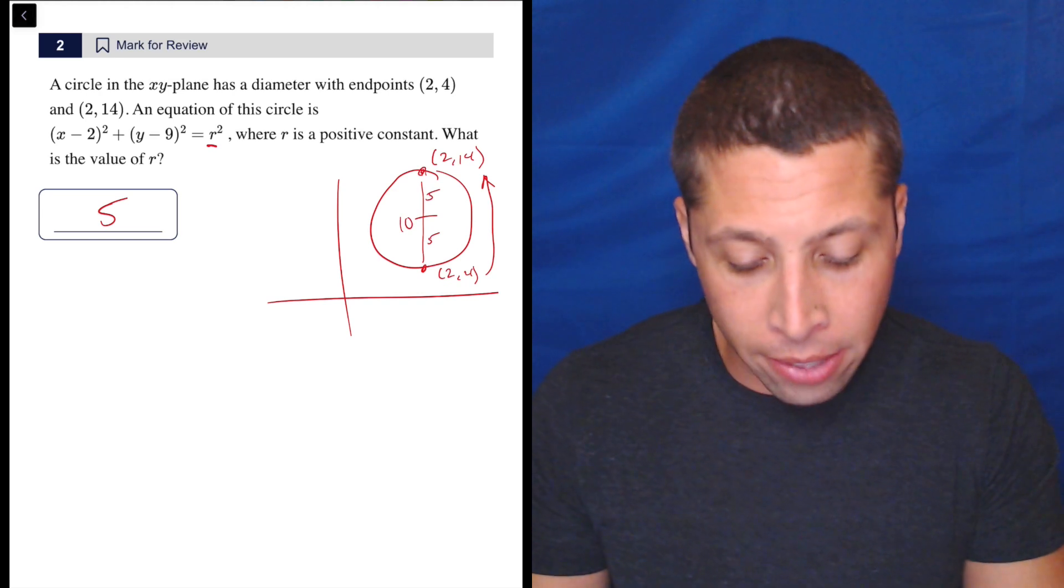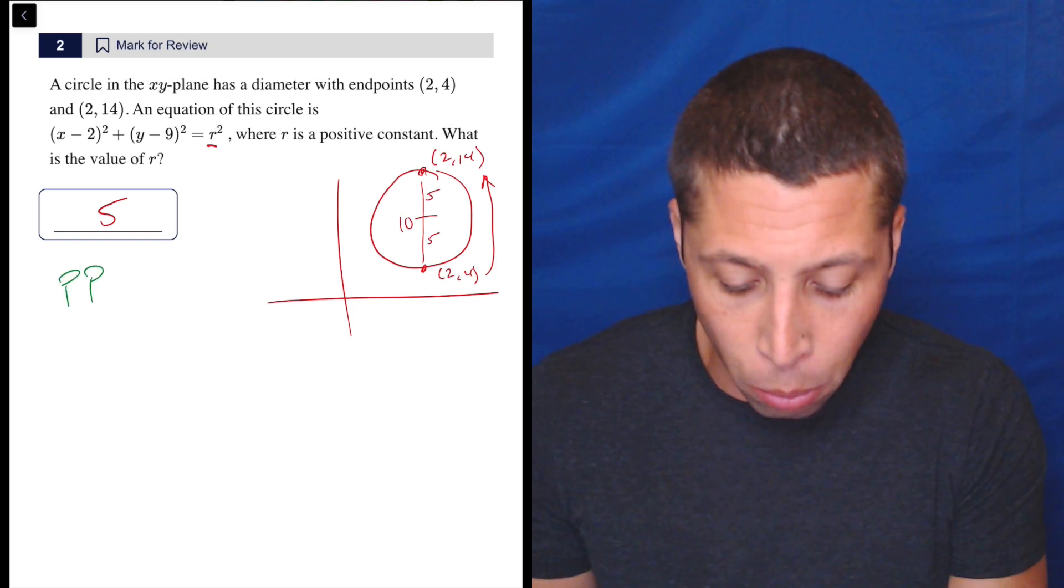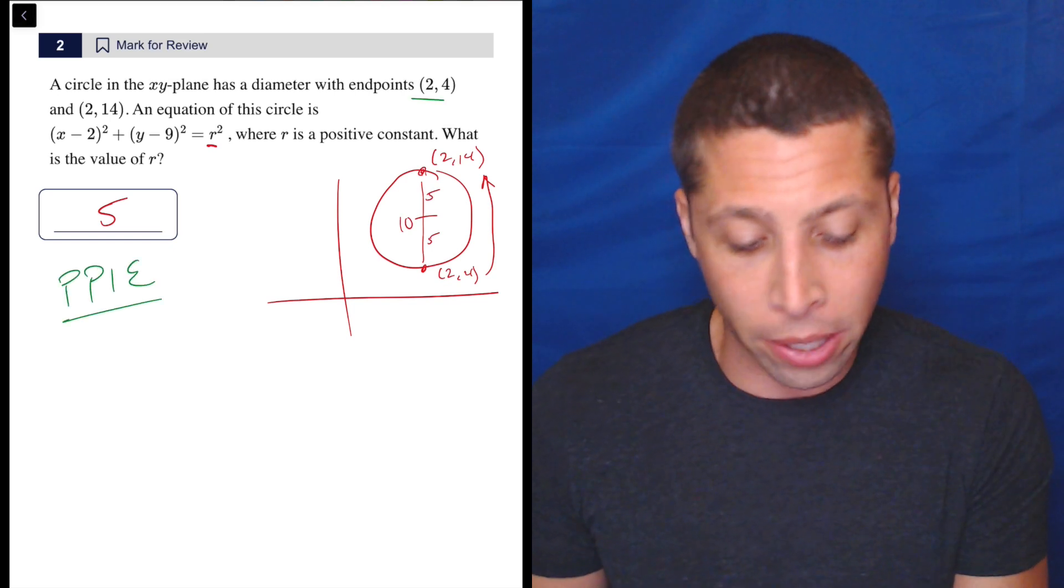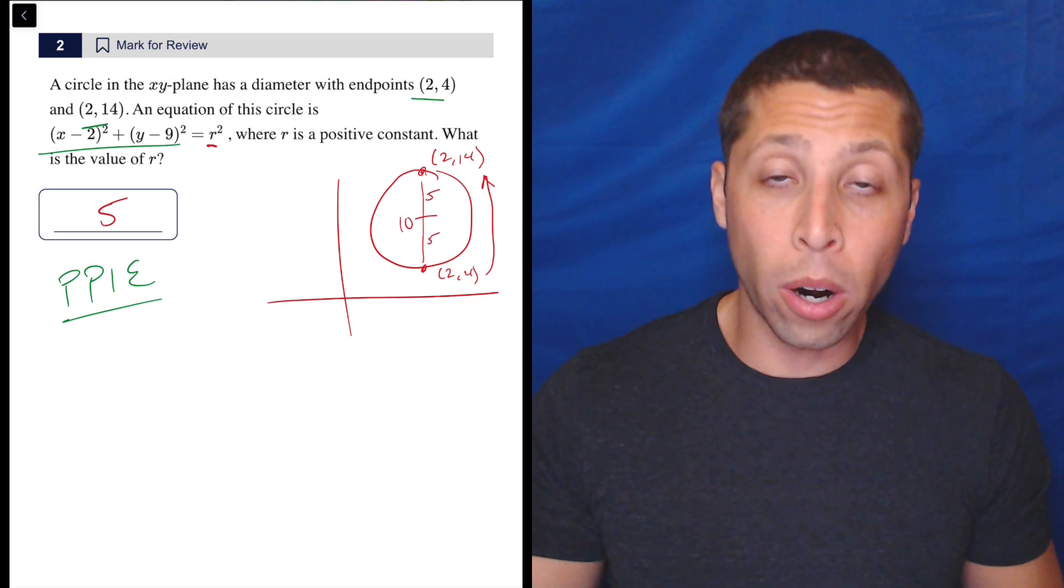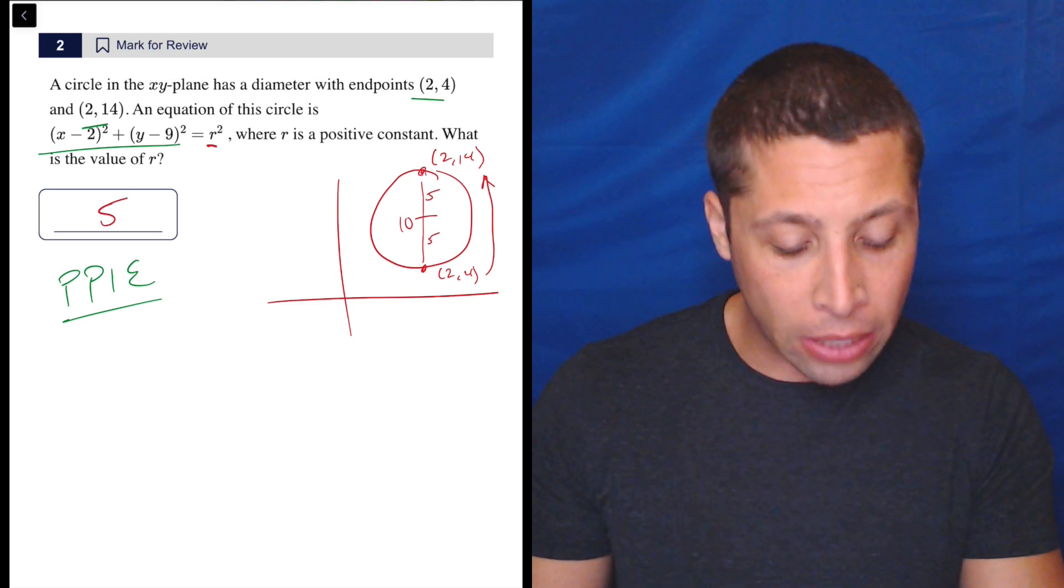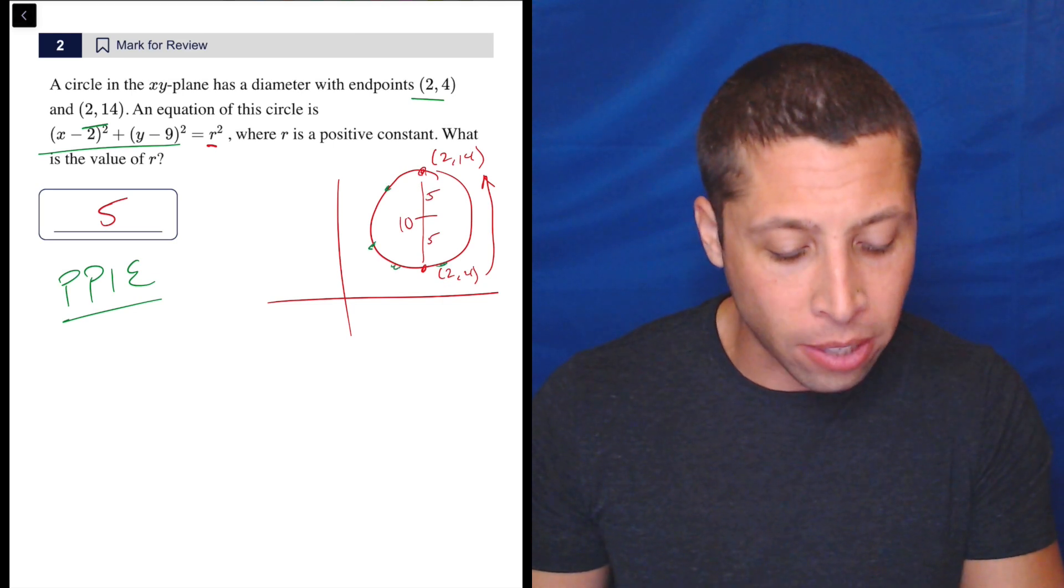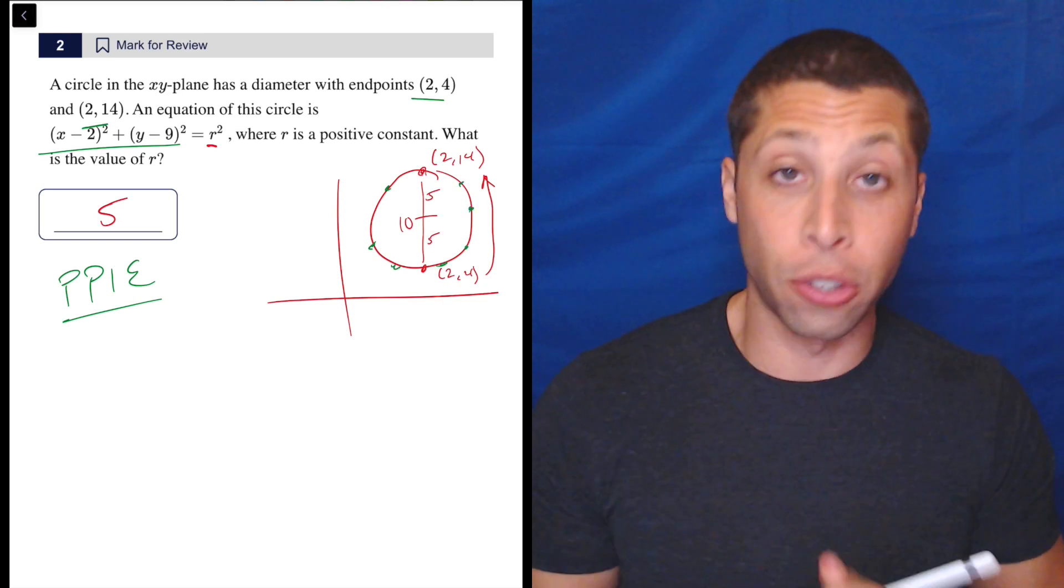Now, the other way to do it is much more strategically. Let's just plug points into equations. We have points. We have an equation. And remember that the way the circle equation works, the X and Y are giving us points that are all on the outside edge, the circumference of the circle.